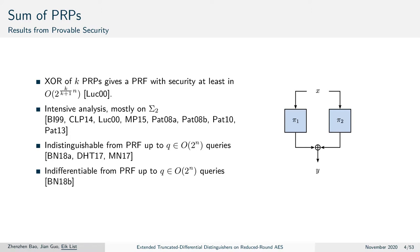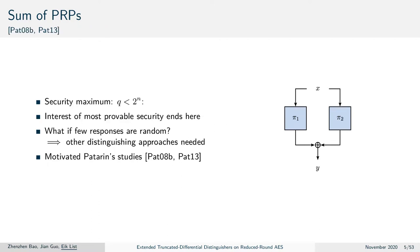It is even indifferentiable from a PRF close to 2^n queries — so close to the full codebook. From a PRF security perspective the interest quite ends here. One knows that this construction can no longer be secure once a distinguisher has collected 2^n minus the last query. When one has all but the last query, a distinguisher can simply build a sum and then predict what the last value must have been.